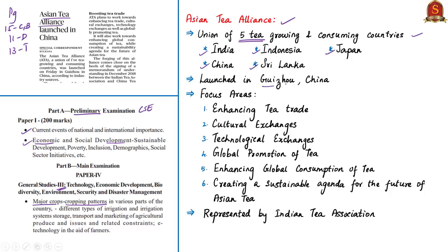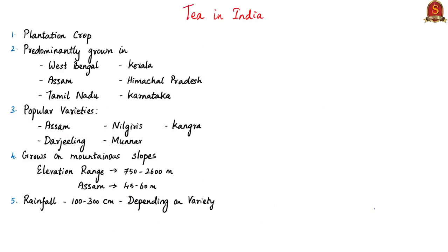The focus areas of the Asian Tea Alliance include enhancing tea trade, cultural and technological exchanges, global promotion of tea, enhancing global consumption, and creating a sustainable agenda for the future of Asian tea. India is represented by the Indian Tea Association. Tea is cultivated as a plantation crop, predominantly grown in West Bengal, Assam, Tamil Nadu, Kerala, Himachal Pradesh, and Karnataka, and also in a few northeastern states.